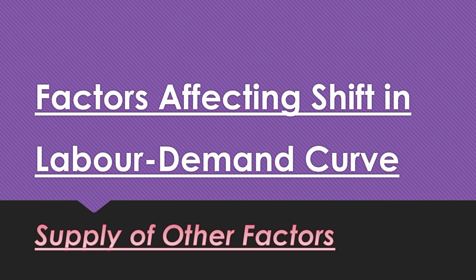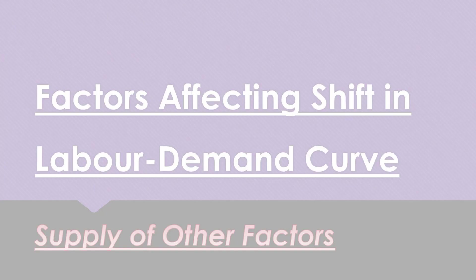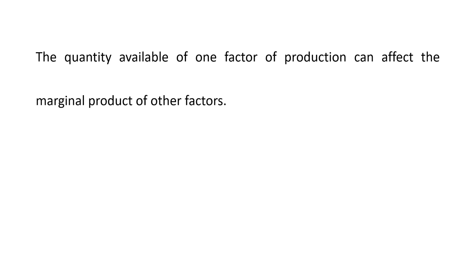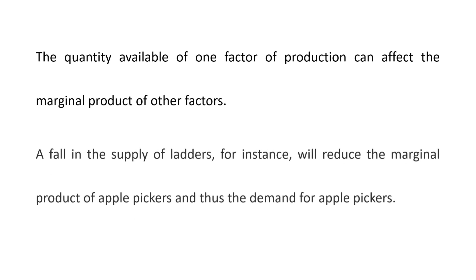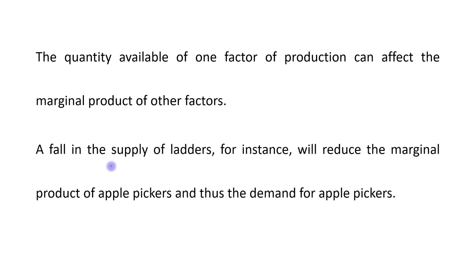The last factor that affects the shift in the labor demand curve is the supply of other factors. The quantity available of one factor of production can affect the marginal product of other factors. For example, a fall in the supply of ladders will reduce the marginal product of apple pickers — that is, the marginal product of labor — and thus the demand for apple pickers.